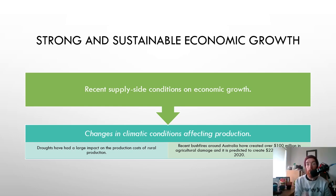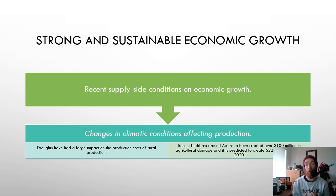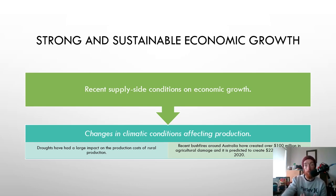Then we've got changes in climatic conditions affecting production. We've had massive droughts and bushfires, and these have caused massive issues in terms of our overall production costs. For example, because of the bushfires, tourism in areas like Bright in Victoria has been absolutely crushed — and now with the COVID-19 pandemic, tourism there has completely disappeared. The recent bushfires are estimated to have created over a hundred million dollars in agricultural damage and were predicted to create over 220 million dollars of damage by 2020, with the actual figure likely being even higher. This damages our natural resources so we can't produce as much, and also limits us in terms of tourism and other things we do really well.